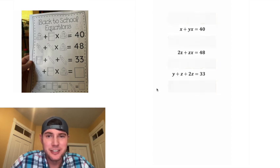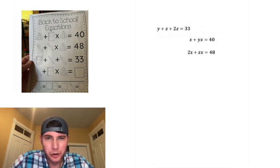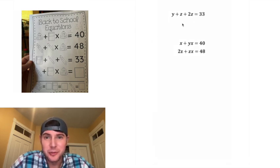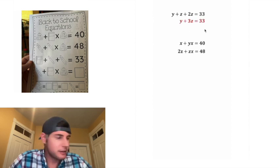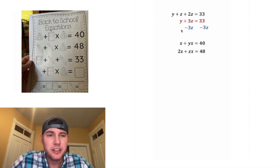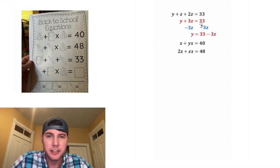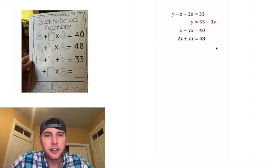Let's switch up the order and start on the last equation. z plus 2z is 3z, and we can bring down the y and the 33. If we subtract 3z from both sides, on the left hand side we'll have y, and on the right hand side we'll have 33 minus 3z. Now let's look at the second equation.